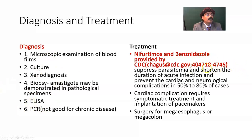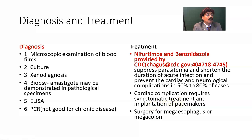Treatment: Nifurtimox and Benznidazole, provided by the CDC. The CDC website has a number so that registered physicians dealing with these patients can obtain these medications. These drugs suppress parasitemia and shorten the duration of acute infection, preventing cardiac and neurological complications in 50 to 80 percent of cases. Cardiac complications require symptomatic treatment and implantation of a pacemaker, because the SA node, AV node, and bundle of His are damaged. Surgery for megaesophagus or megacolon may also be required. Treatment needs a cardiologist, surgeon, internist, and infectious disease specialist.